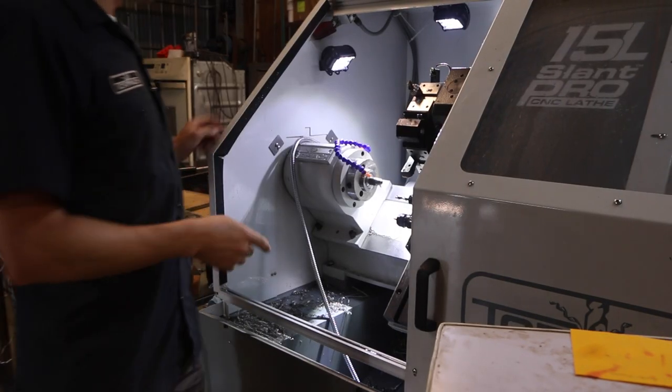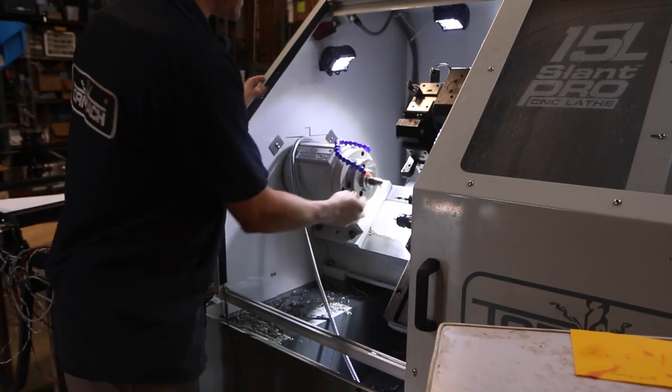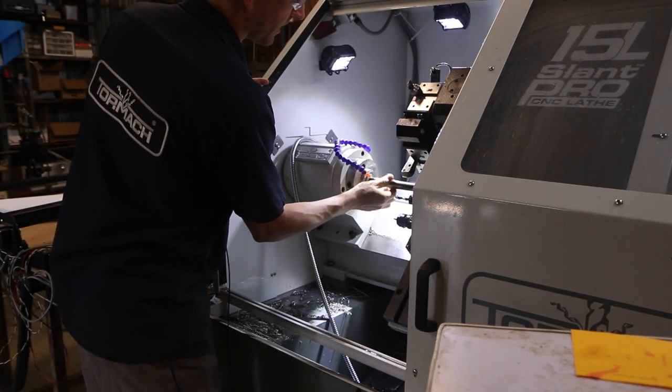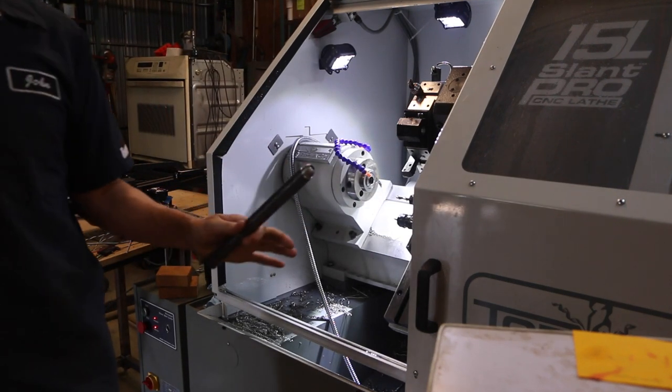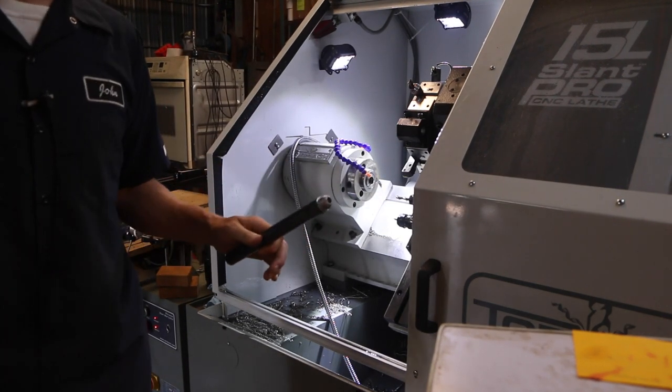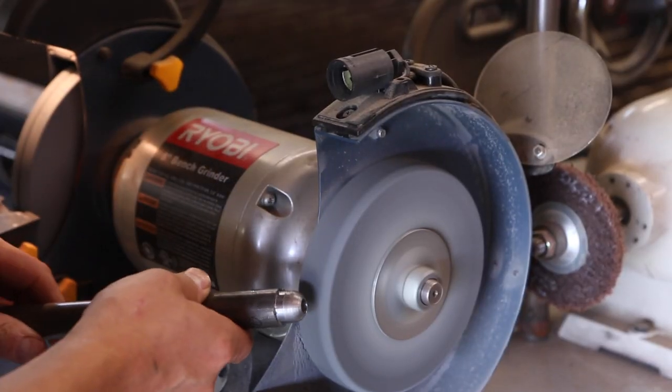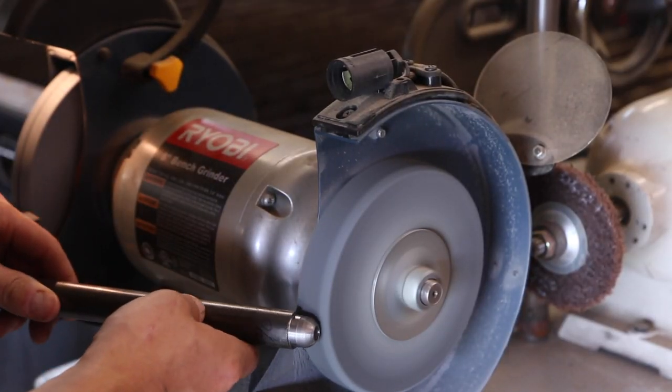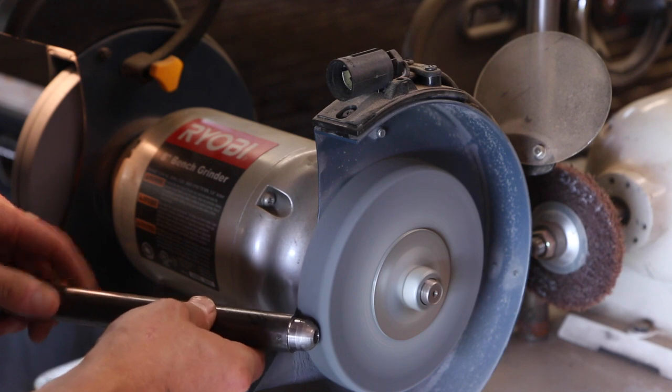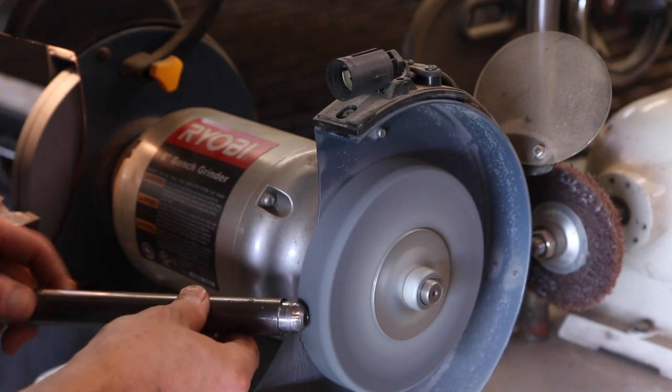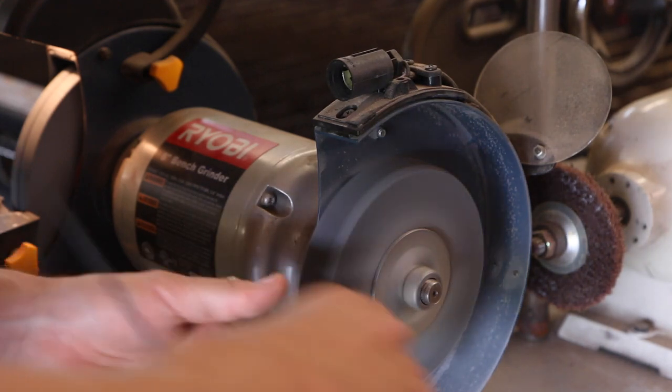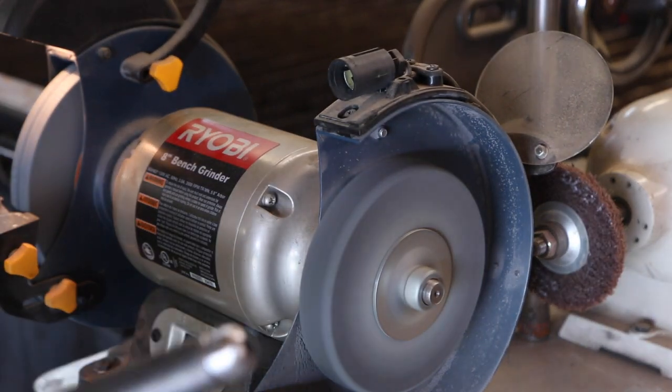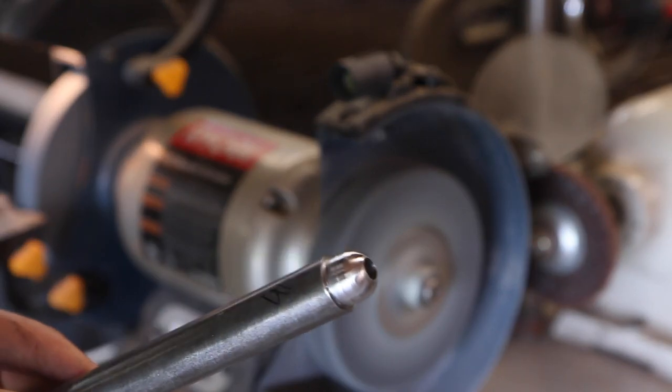We're going to do something a little different. We haven't parted it off yet, but we're going to take it out. Because we're only parting it off at a rough dimension anyway. And while I've got it on this nice stick, we're going to go polish that on the Scotch-Brite wheel. Look at that. Beautiful.